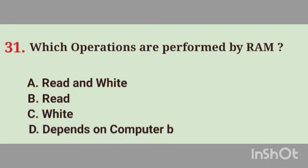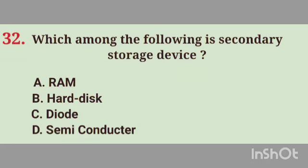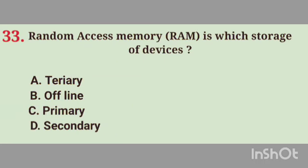Question No. 31. Which operations are performed by RAM? Right answer, Option A. Read and Write. Question No. 32. Which among the following is a secondary storage device? Right answer, Option B. Hard Disk.